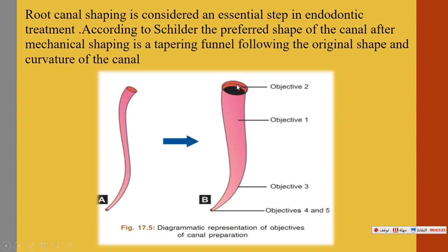The second objective: make the preparation multi-flow, meaning the instrument can pass easily without any obstruction through different complexities in the canal. The third objective: make the canal narrower apically and wider coronally. The fourth objective: prevent transportation of the canal. The fifth objective: make the apical preparation as narrow as possible, with no over-enlargement of the apical foramen.